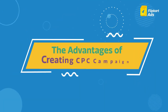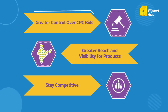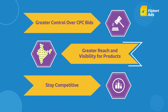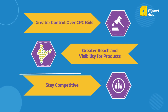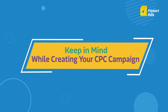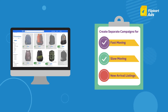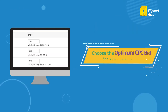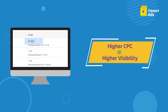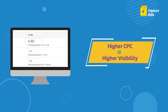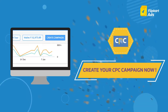The advantages of creating a CPC campaign are: you get complete control over choosing the CPC bid for your ad groups, your product can reach out to more customers and enjoy greater visibility, and it helps you stay competitive. When creating a CPC campaign, keep in mind that you should create separate campaigns for fast moving, slow moving, and new arrival listings, and choose the optimum CPC bid for your campaign — because the higher the CPC, the higher will be the visibility. Now that you know how to create your CPC campaign, visit your dashboard and create your new CPC campaign now.